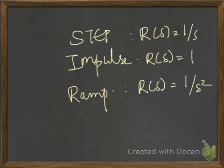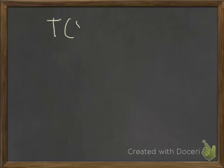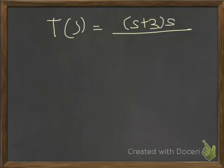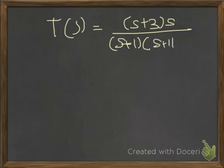So you have a transfer function T(s). We have a transfer function T(s) as given here — I have used the same example in my videos on finding the impulse response and the step response of given transfer functions. So now we have T(s) equal to this.